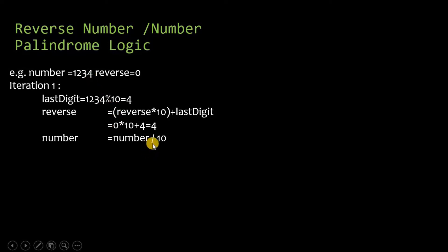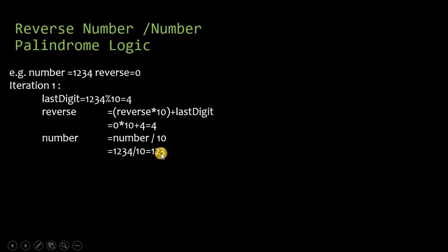Then we remove the last digit from the number using the division operator: number equals number divided by 10. So 1234 divided by 10 gives 123. This completes the first iteration in which we have reverse as 4 and number as 123.